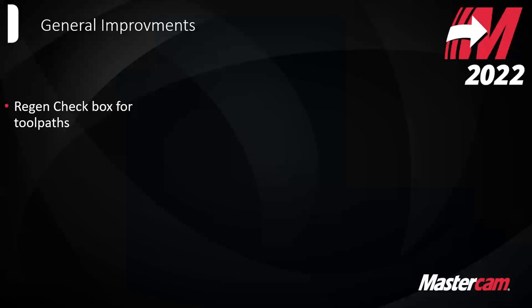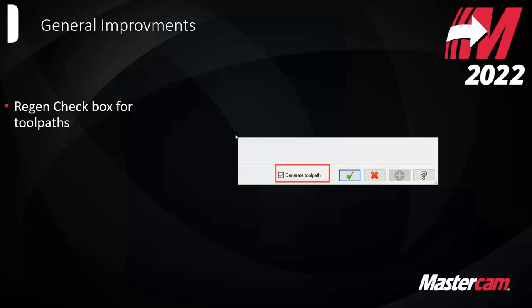There's now a regen checkbox for tool paths — this is a small quality of life change. As you exit a tool path and hit the green check mark, it's going to automatically regenerate. Normally you'd have to go into the operations manager and click regenerate manually. The only warning is if you're finalizing a full 3D tool path, you might want to leave that unchecked to make sure you're ready to regenerate at that specific time.